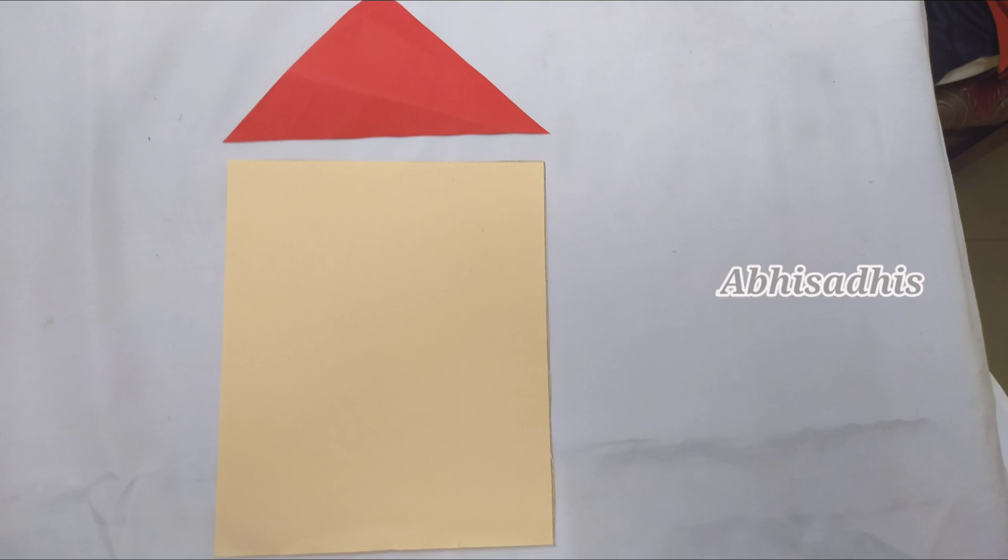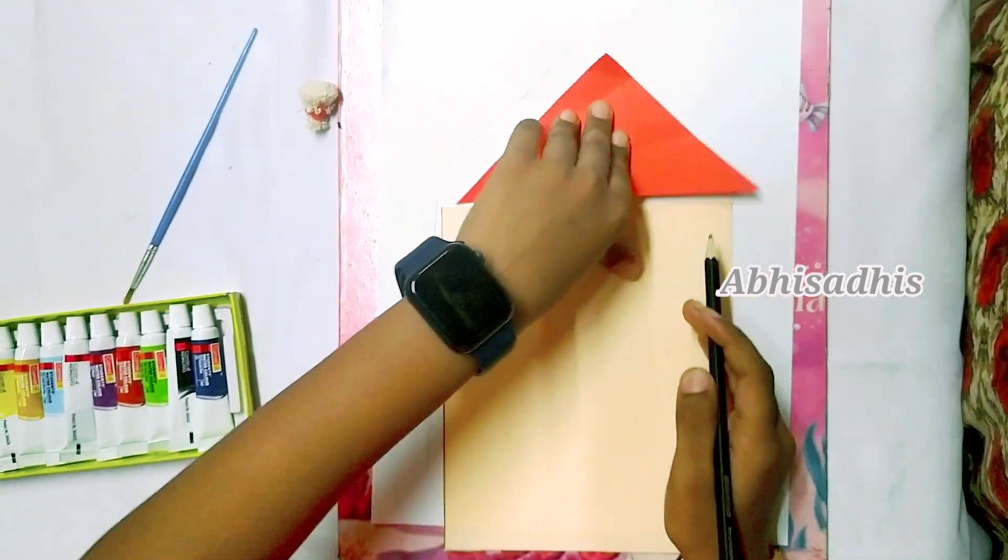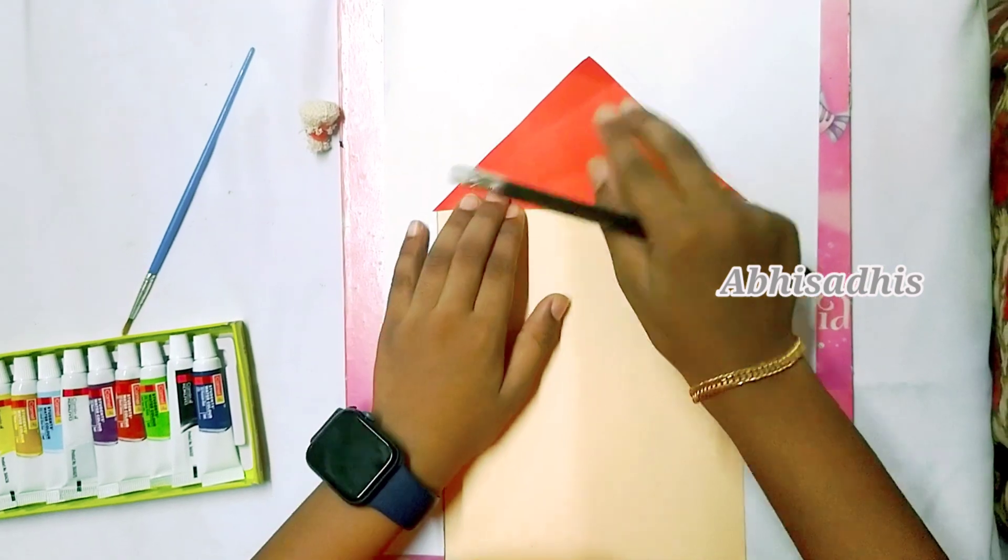Take both the cutouts and place them in a plain A4 sized paper, and make an outline of them in a shape of a house.